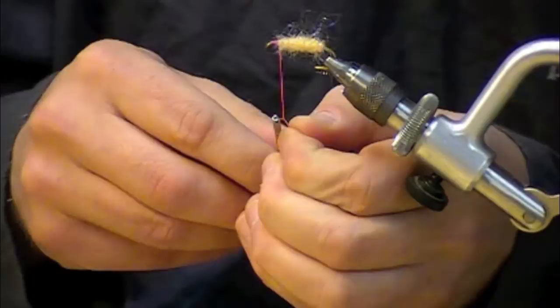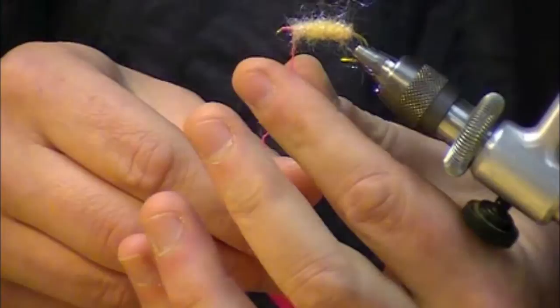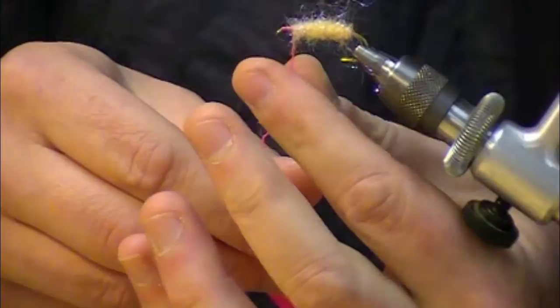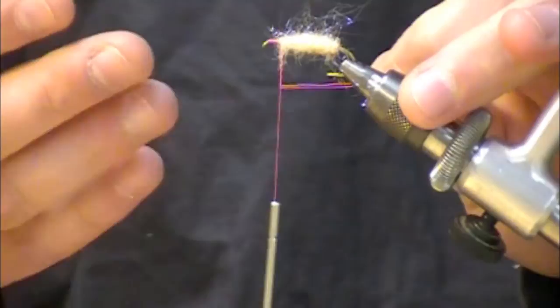So when you're done we just pull the excess thread off of that pigtail, separate our loop a little bit. Unlike a lot of other tools for making dubbing loops we've already tied down over the top of it so you know I can let go of it and the thread stays where it is, just make a couple wraps to kind of help finish that up.